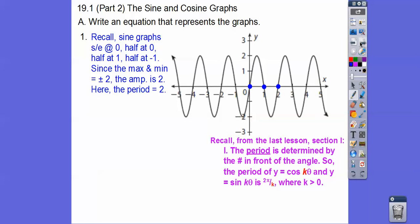Let's go back to the last lesson and section. The period is determined by the number that's in front of the angle. If we have y equals the cosine of kx, then the period is two pi over k. Because our old period happened in two pi. Here, it happens in just two. I know two pi is not the same as two.